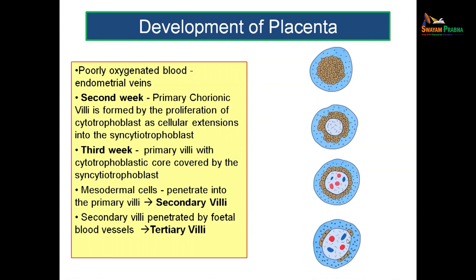Towards term, the fetal capillaries move towards the periphery, and some cytotrophoblast cells disappear — this is how the term villus forms. The chorionic villus is considered the functional element of the placenta.